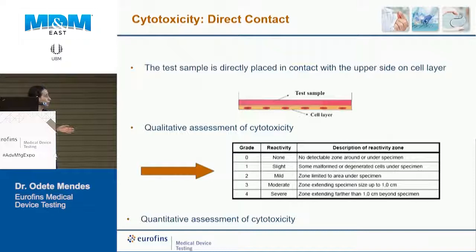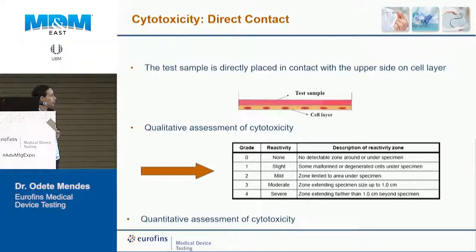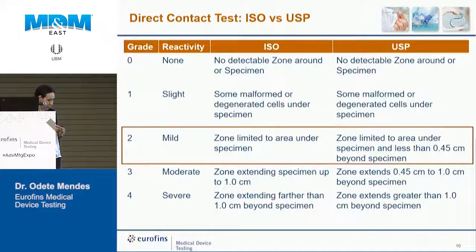For direct contact testing, the test substance — such as a piece of a latex glove — is placed directly in contact with the cell layer. Usually a qualitative assessment is done based on the reaction around the placement location, though quantitative assessment is also possible. There are two major guidelines: ISO 10993 and the USP guideline, which are very similar with only minor differences in classification criteria. Both consider a grade 2 or above as cytotoxic.